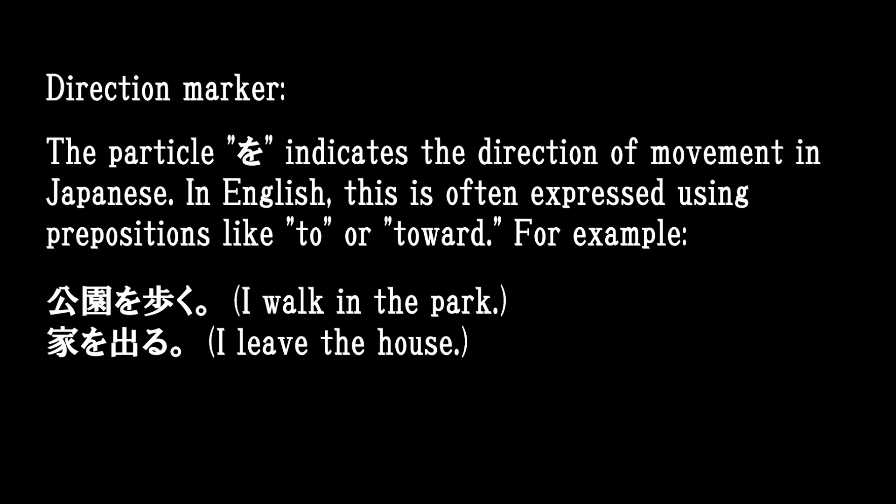Direction Marker: The particle O indicates the direction of movement in Japanese. In English, this is often expressed using prepositions like 'to' or 'toward.' For example: I walk in the park; I leave the house. In Japanese: 公園を歩く, 家を出る.